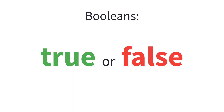Though they have an unusual name, booleans are simple. A boolean value can be only one of two possible values: true or false. There will be times where we want to ask our program yes or no questions, then run different code based on those answers.